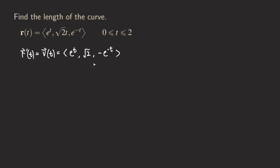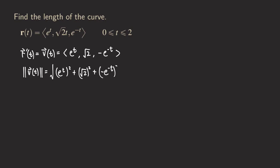Our next step is to find the speed function, which is the magnitude of the velocity function. The magnitude is found by taking the square root, and inside the square root we square each of the coordinates of the vector and add them together. So we get (e^t)² plus (√2)² plus (−e^(−t))².